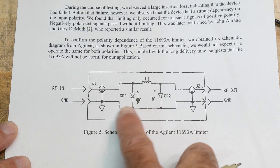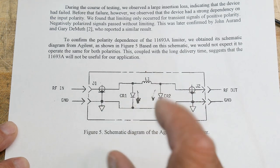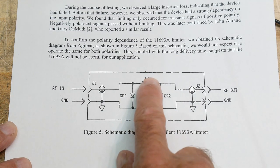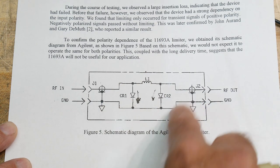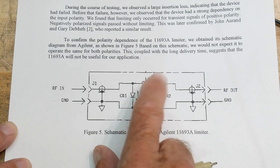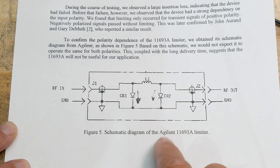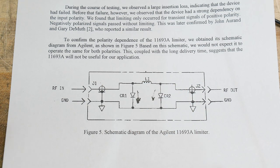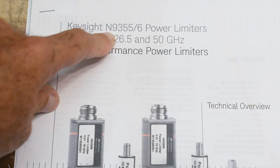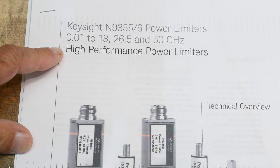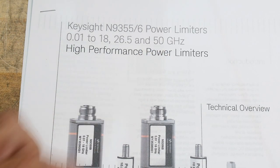That's basically how they work. This one has two diodes. Some of them have three diodes, like a coarse, medium, and fine kind of thing. Usually they have matching inductors in them as well - there's some capacitance associated with these things, there's a matching inductor to make sure it's all 50 ohms and stuff. They still do build these things. Here's the latest Keysight ones - Keysight power limiters up to 50 gigahertz.